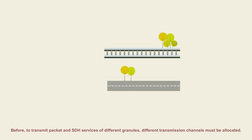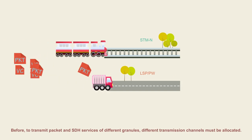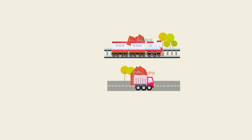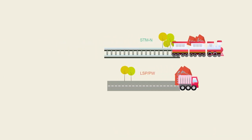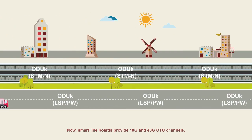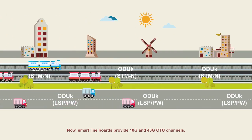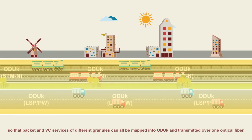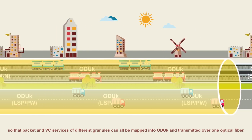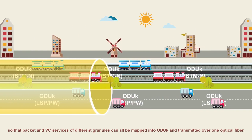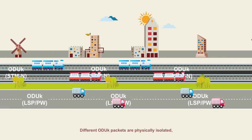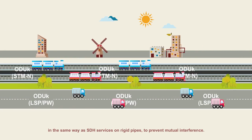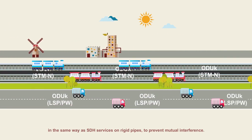Before, to transmit packet and SDH services of different granules, different transmission channels had to be allocated. Now smart line boards provide 10G and 40G OTU channels, so that packet and VC services of different granules can all be mapped into ODUk and transmitted over one optical fiber. Different ODUk packets are physically isolated in the same way as SDH services on rigid pipes to prevent mutual interference.